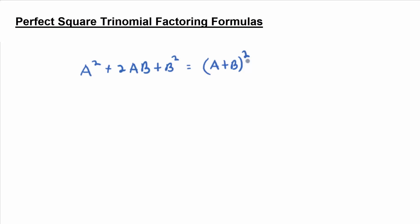If you're given something of that form on the left, we call that a perfect square trinomial — it's a trinomial, and we call it a perfect square trinomial because it factors to be (a + b) squared.